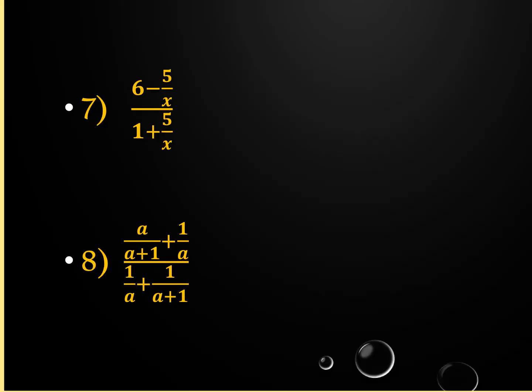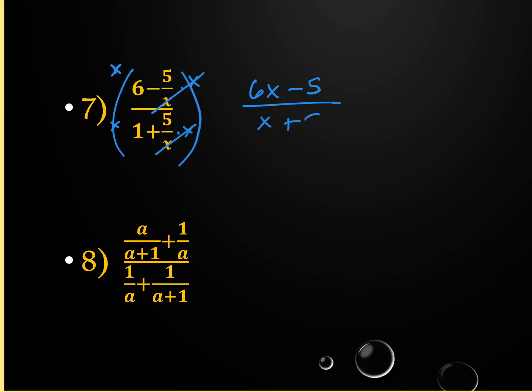For example seven, I'd recommend method two since all denominators are just x. Multiply everything by x: 6/x times x gives 6x, the x's cancel. Minus 5 times x gives 5x, 1/x times x cancels to 0, plus 5. That simplifies to (6x-5)/(x+5). The simpler the denominator, the easier method two is — especially if they're all the same denominator.